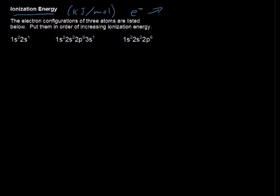Well, before we get into the particulars, we're asked to put these in order of increasing ionization energy. We're given some electron configurations of three atoms. So before I get into why it is that they would have different ionization energies, let's just identify these atoms.